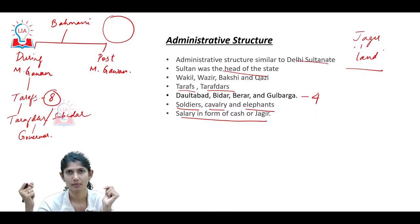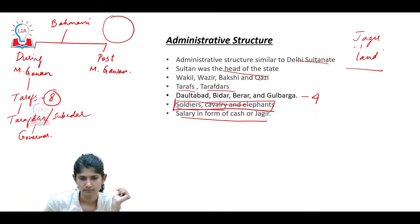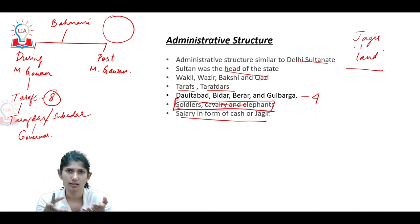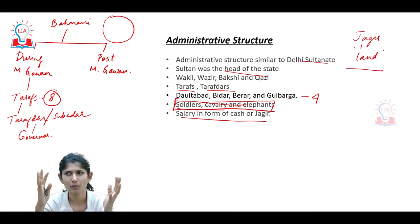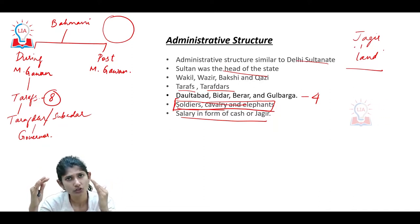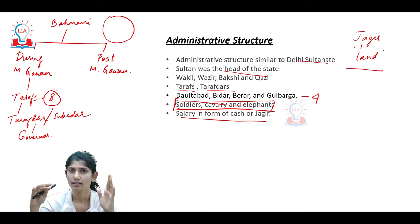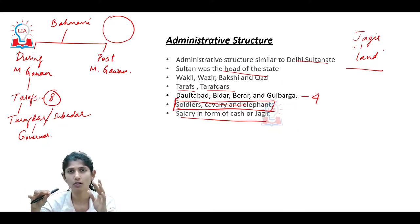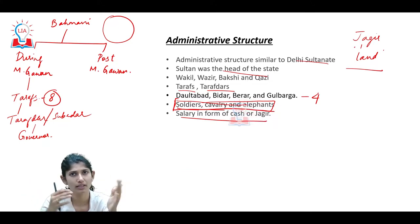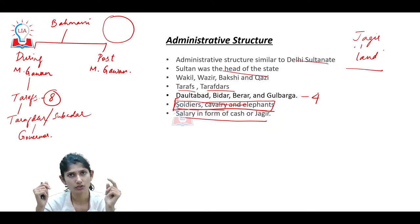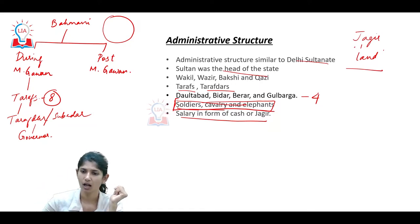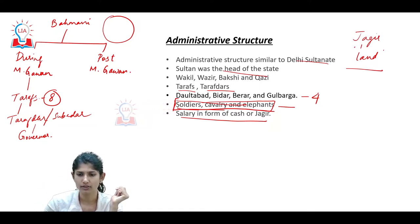The Vijayanagar Empire, which we have already covered in a separate series, was situated south of the Tungabhadra region. Contemporary to Vijayanagar was the Bahamani kingdom. Both were strong - two strong central authority powers existed in southern India. To remain strong, both needed a strong military. The Bahamani military included soldiers, cavalry, elephants, and also gunpowder.